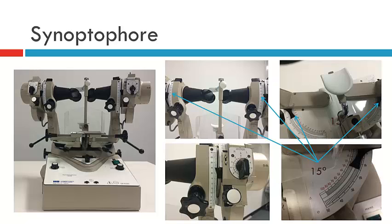When assessing a patient for AV patterns — assessing in primary elevation and depression on the synoptophore — it is good to do that assessment at 30 degrees. This is one of the few instances where you'd move the tubes up to 30 degrees and down to 30 degrees. In horizontal gaze, however, it becomes very difficult for the patient to look through the tubes at 30 degrees, so you wouldn't generally move the horizontal tubes that far.